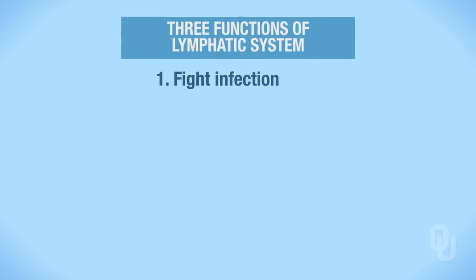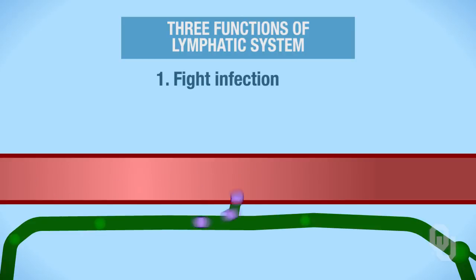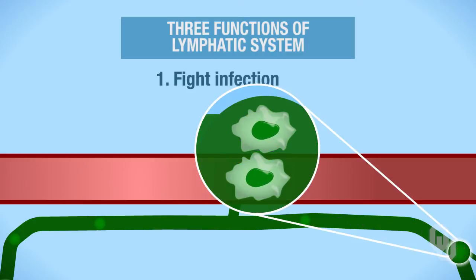Number one, to fight infection. Let's imagine for a minute that you have a bacterial infection — a systemic infection, meaning the bacteria are in your bloodstream. Those bacteria can get into the lymphatic system. The really cool thing about having the lymphatic system is that those bacteria will pass through the lymph nodes, where the macrophages sit and wait to engulf those bacteria.